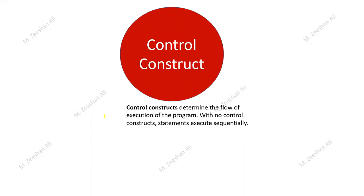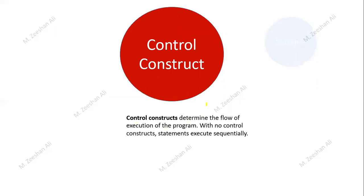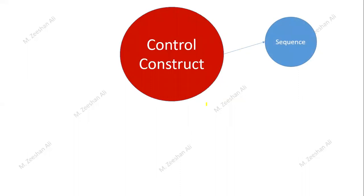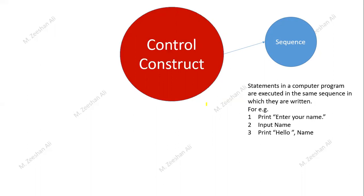A program is a set of instructions written in a sequence. If you want to execute one specific statement at some point, you need to control your program. If there are no control constructs, whatever sequence you followed while writing the program, that same sequence is followed. The first part of the control construct is sequence — the program executes statements in the same order they are written.